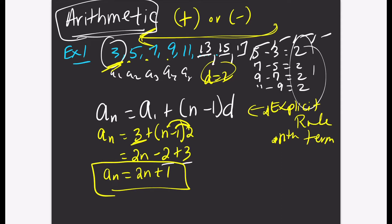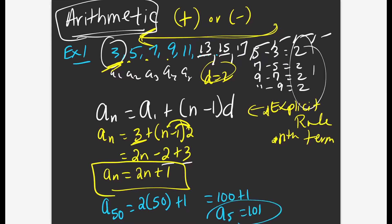I asked you to find the 50th term, so plug in 50 for n. If you simplify that, you get 2 times 50 which is 100, and 100 plus 1 is 101. So again, we found the 50th term by plugging into our explicit rule — the answer is 101.